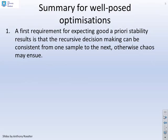In the previous video, we looked at what we needed in order to ensure a well-posed optimization. The first requirement for expecting good a priori stability results is that your recursive decision-making can be consistent from one sample to the next. Because if you can't be consistent, then you may end up with chaos.